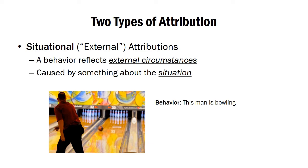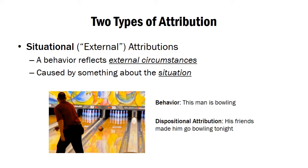Consider the same example of a man going bowling. In the dispositional case, we explained the behavior by something about him — that he likes bowling. But if you instead drew a situational attribution, you might say his friends made him go bowling tonight; they wanted to go and made him engage in this activity. Now the explanation has little to do with how we're judging the person, and rather how we view that person's situation.